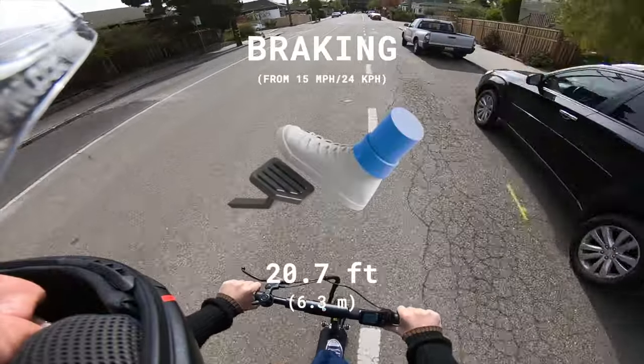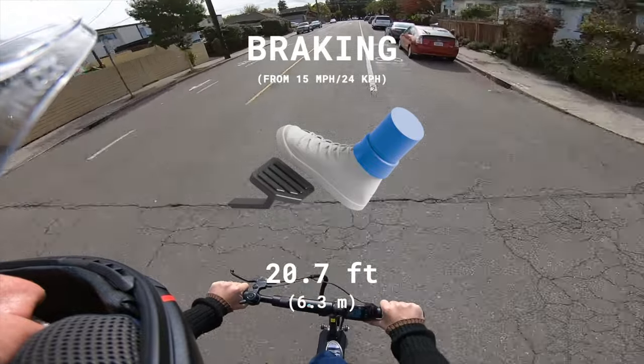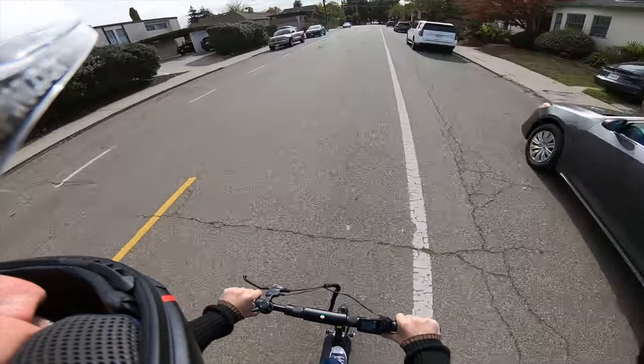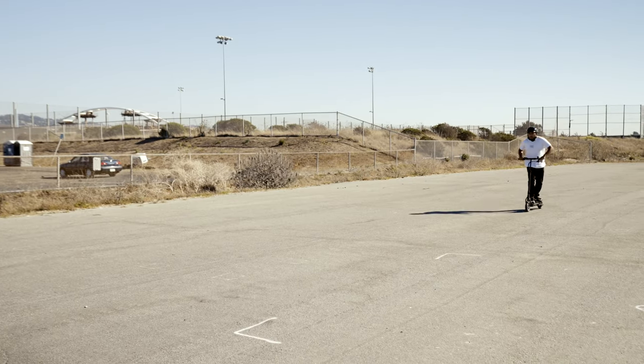The combination rear drum brake and rear regen on the scooter bring it to a stop in 20.7 feet from 15 miles per hour, which honestly isn't great, especially given that it is a fast scooter. So if you're bombing along at top speed on our Horizon, we'd advise that you look far ahead to avoid braking at the very last minute.